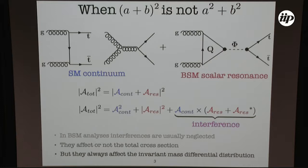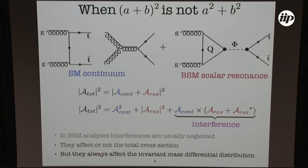Let's start with really basic stuff. We take the tt-bar final state. In life you usually have a continuum background — the Standard Model background. We're looking for some new resonances, say five resonances as our signal. As we learned in high school, the total amplitude squared gives the square of the continuum plus the resonance, yielding: the square of the background, the square of the signal, and the interference term. Many times in BSM analysis this interference term is neglected because it's often small. We will see it may or may not affect the total cross-section, but it always affects the invariant mass distribution. With LHC Run 2 we will start to be sensitive to such effects.